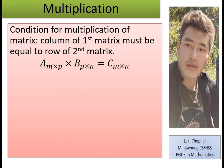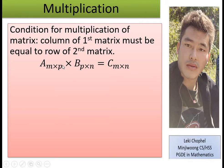Here, matrix A has order M×P and matrix B has order P×N. Can you multiply A and B? Yes, because the column of the first matrix is P and the row of the second matrix is P — they are equal. The product matrix C has order M×N.